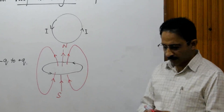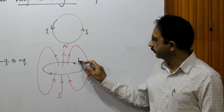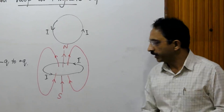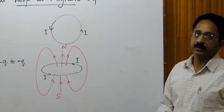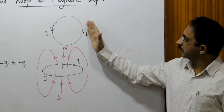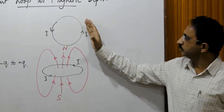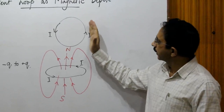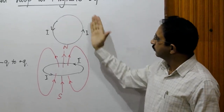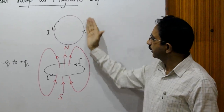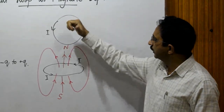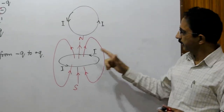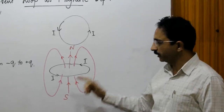Now, for the current I flowing in this current loop — which is a conventional current — we look at the direction of the magnetic field. The direction can be found using the right-hand grip rule: if we curl the right-hand fingers in the direction of the electric current, then the thumb gives us the direction of the magnetic moment, or the direction of the magnetic field.